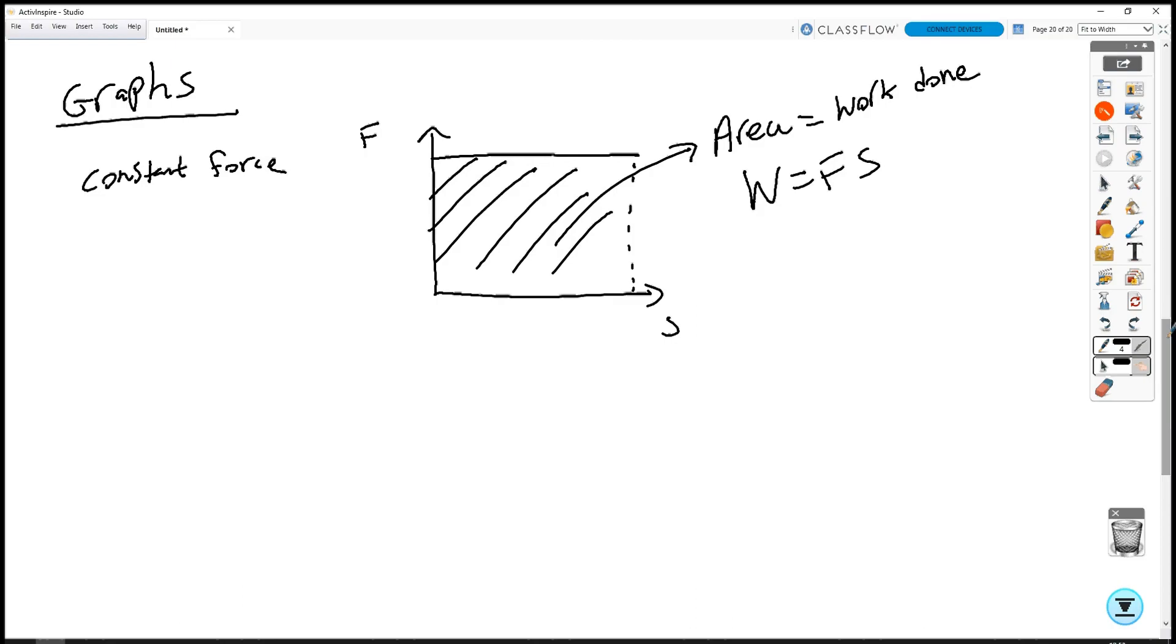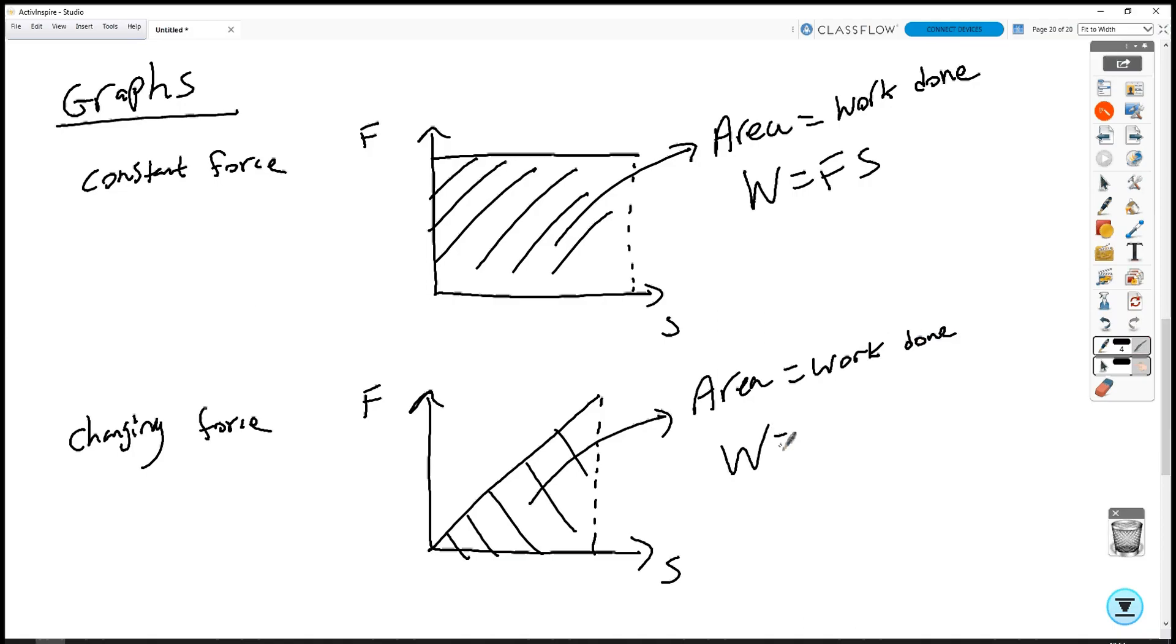Sometimes the force might not be constant, the force might be increasing. So we'll do changing force. Now, if you've got a changing force, it's still going to be the area under the graph. But now the area, and again, I'll write down area equals work done. But in this case, it's going to be equal to a half Fs. So this is going to be used if something is, for example, accelerating. So a motor might accelerate something upwards. Or a motor in a car might be causing the car to accelerate.